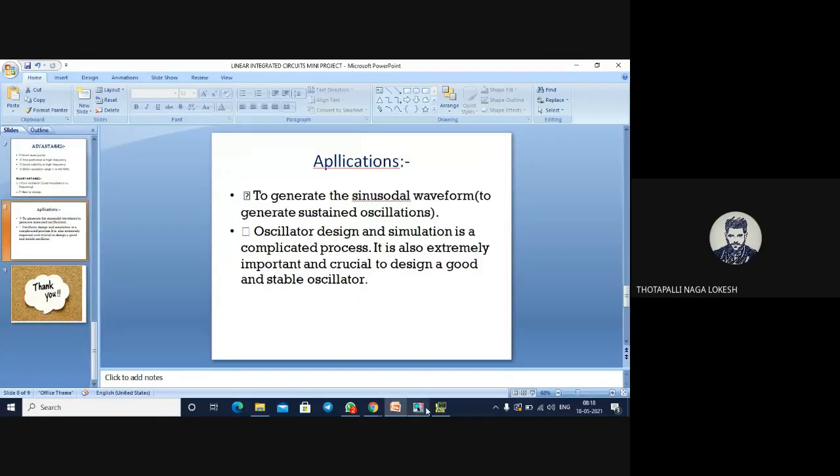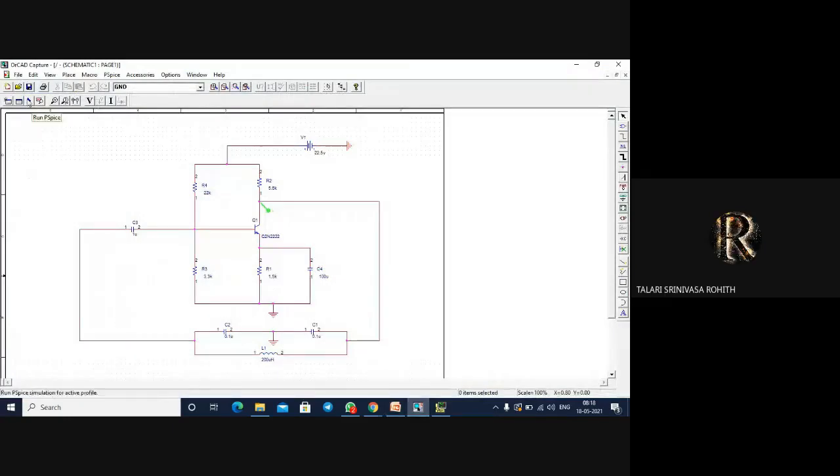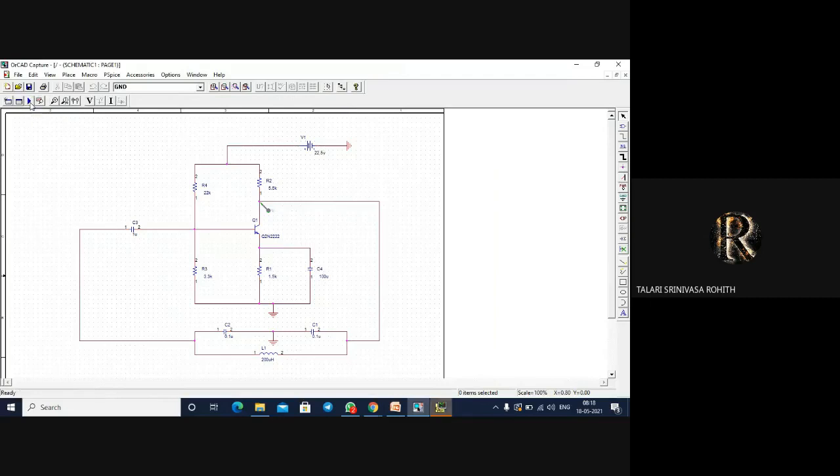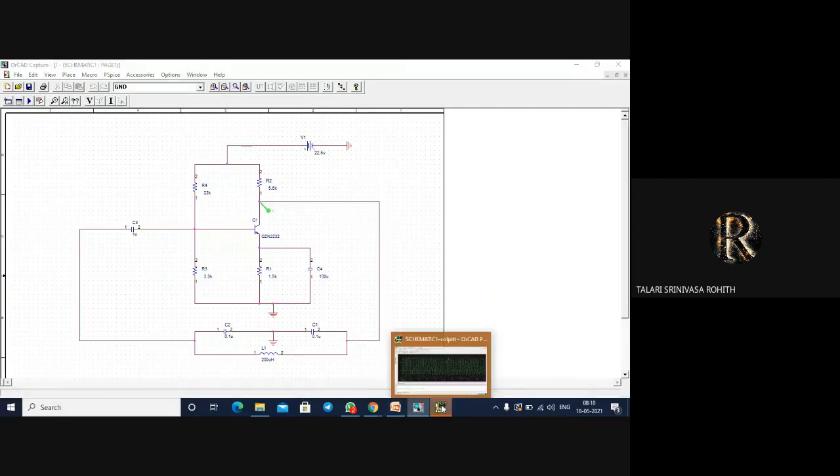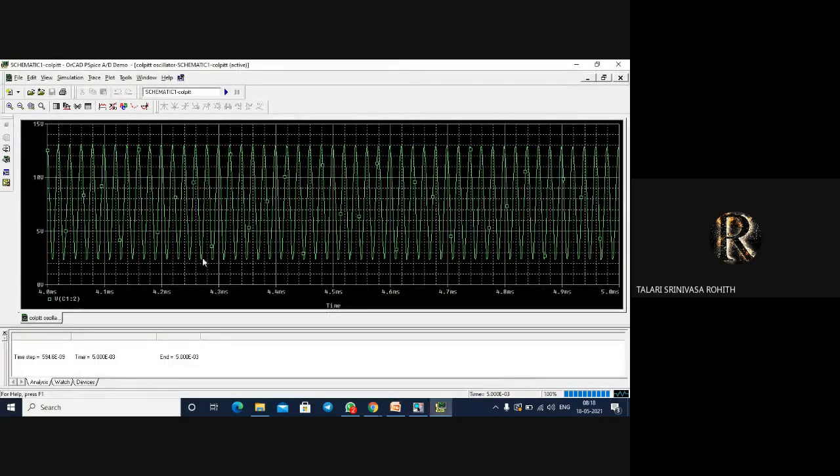The demo circuit will be presented. This is the demo circuit of Colpitt's oscillator, and we run the circuit. The output will be shown here. This is the output of Colpitt's oscillator.